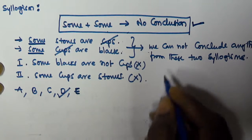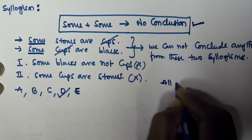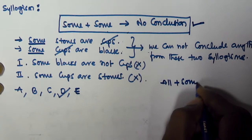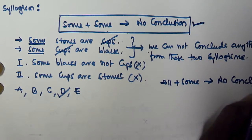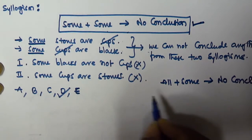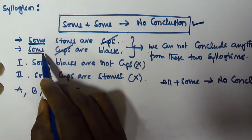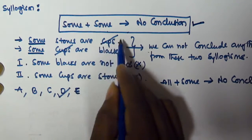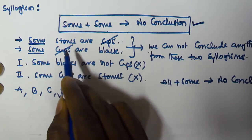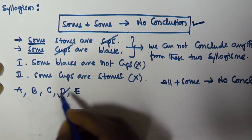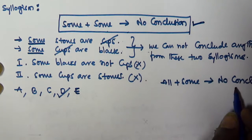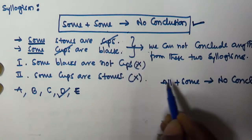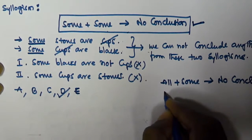In previous videos we also saw that 'all plus some' will give no conclusion. Whenever you see 'all' in the first statement and 'some' in the second, and the predicate of the first is equivalent to the subject of the second, directly select option D, because there is no conclusion we can generate from the given two syllogisms.